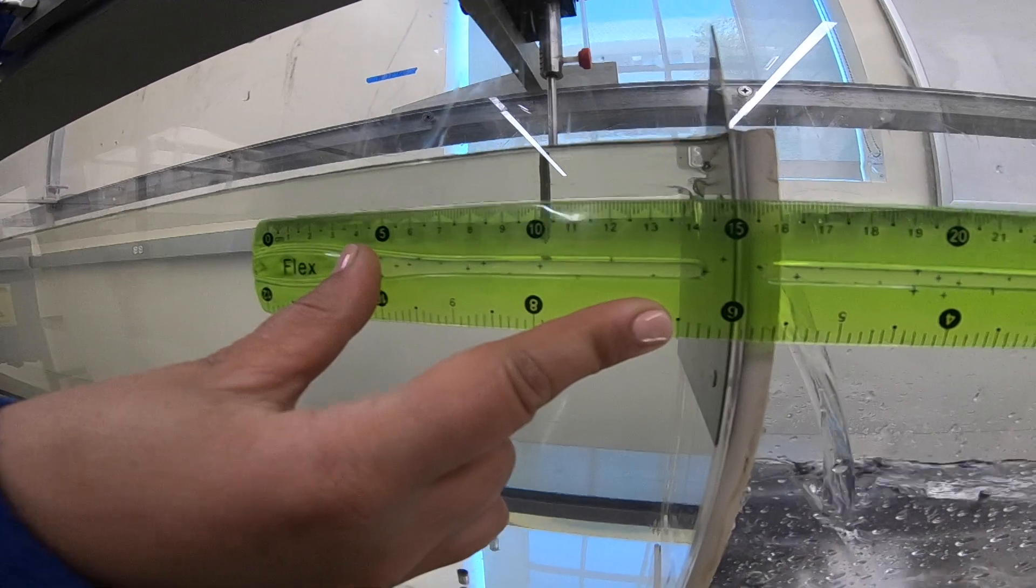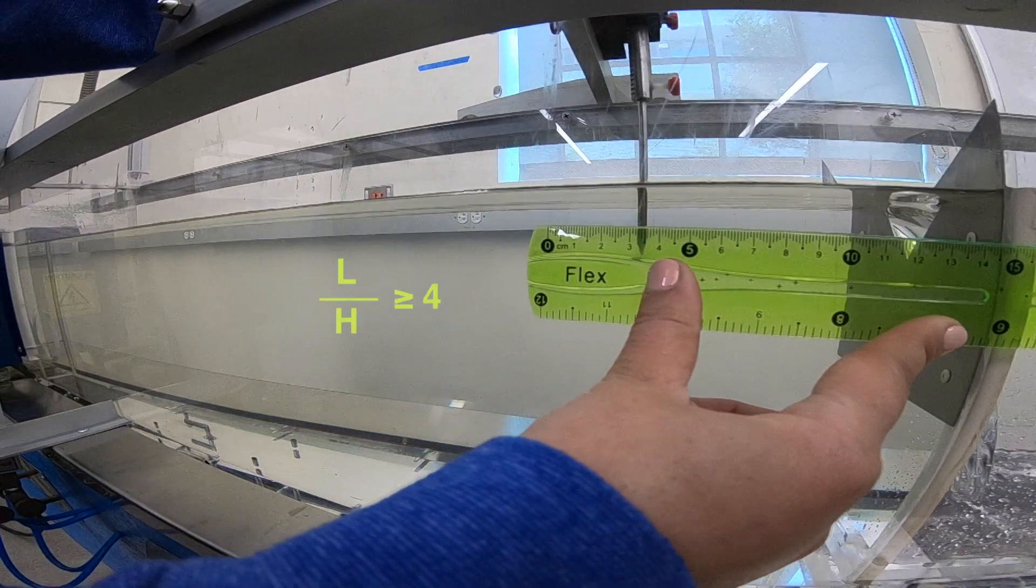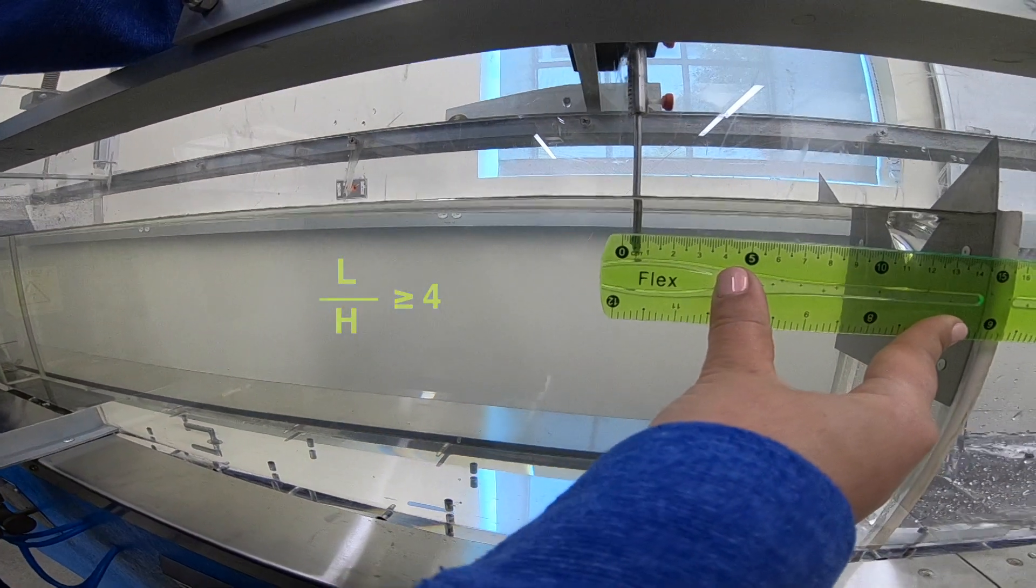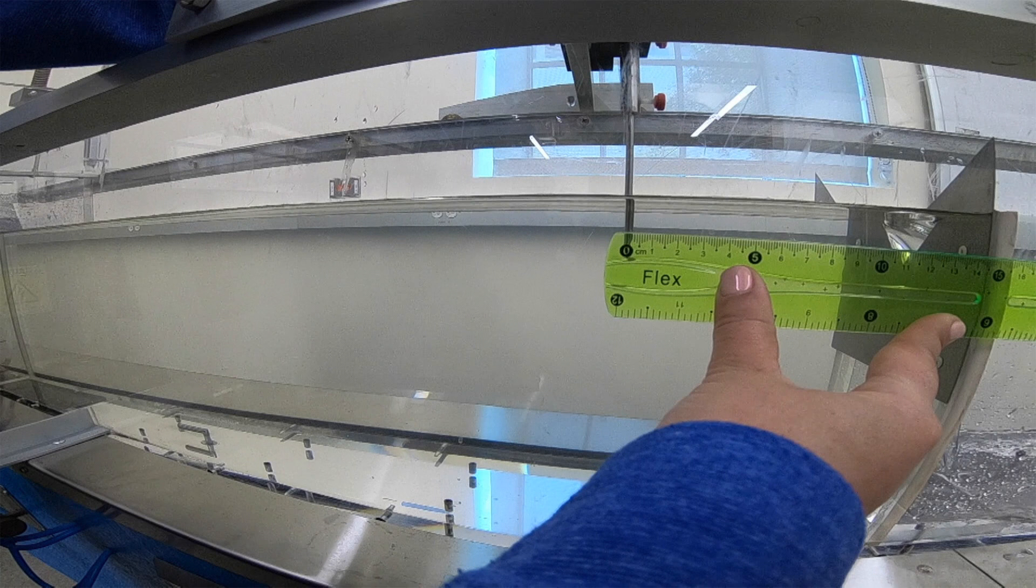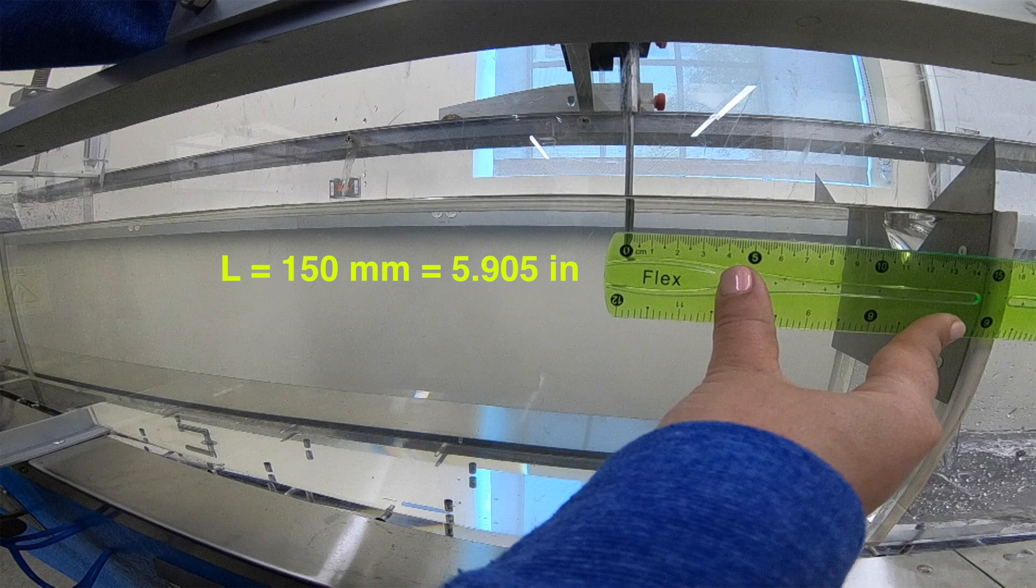The head measurement should be taken at a distance L of at least 4 times the hydraulic head H. We try a distance L equal to 150 millimeters or 5.905 inches.